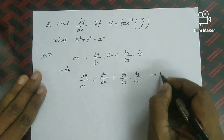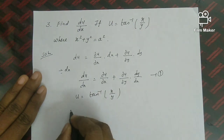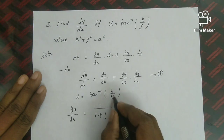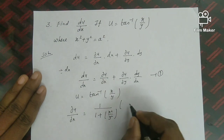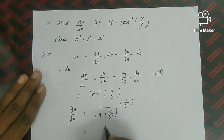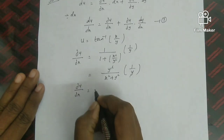For ∂u/∂x with u = tan⁻¹(x/y): the derivative of tan⁻¹ is 1/(1 + argument²). The argument is x/y, so we get 1/(1 + x²/y²) · (1/y). Applying LCM: y²/(y² + x²) · (1/y) = y/(x² + y²). So ∂u/∂x = y/(x² + y²).